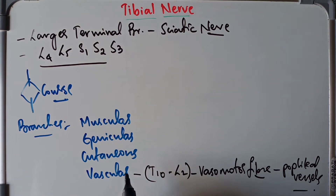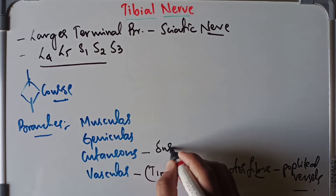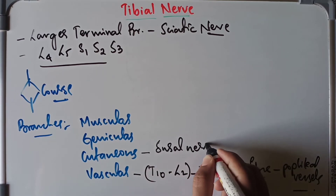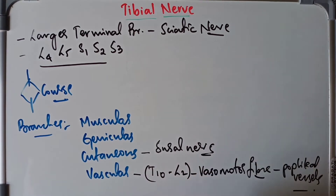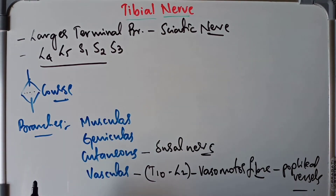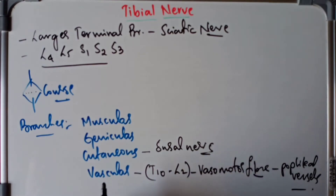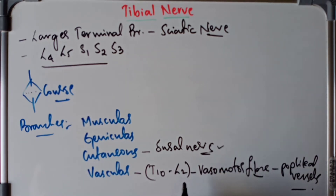Moving on to the cutaneous branches — the cutaneous branch of the tibial nerve is called the sural nerve. It arises in the middle of the popliteal fossa, then runs vertically downward underneath the deep fascia of the fossa, and then pierces the roof of the inferior angle.